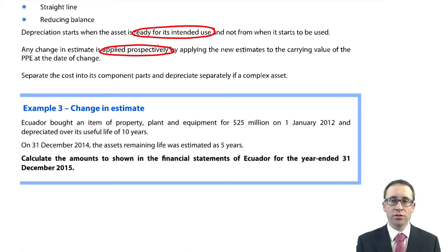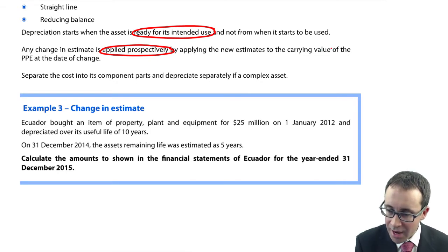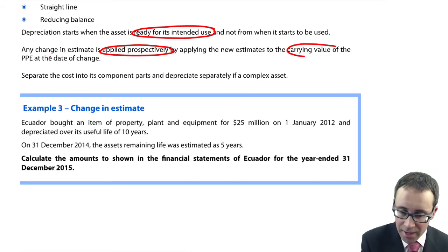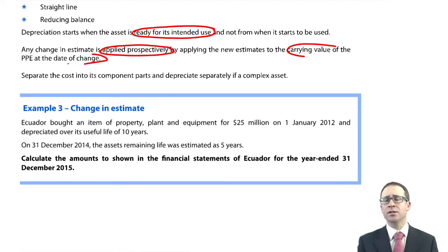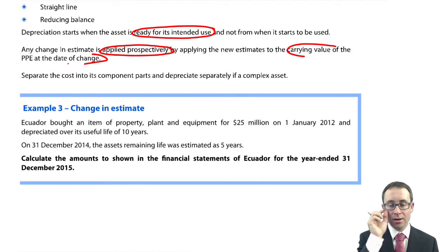How do we go through and adjust for that change in estimates? You apply it to the carrying value of the PPE at the date of change. So work out what the carrying value is when you decide to change the estimate and then apply the new estimates.